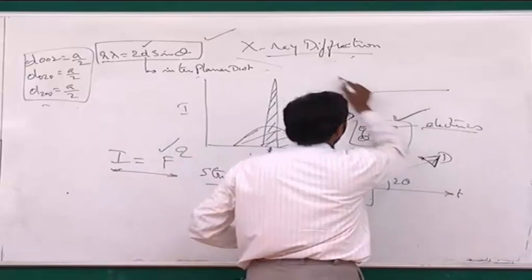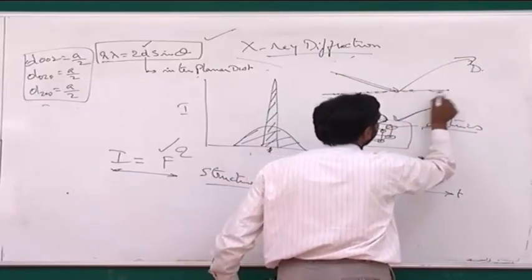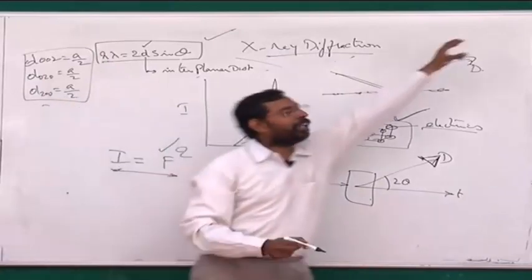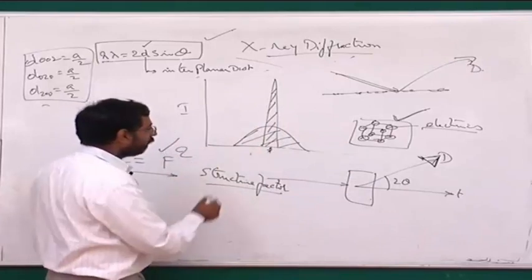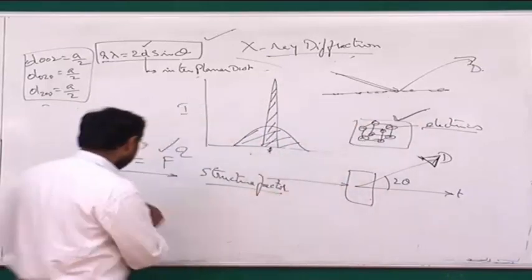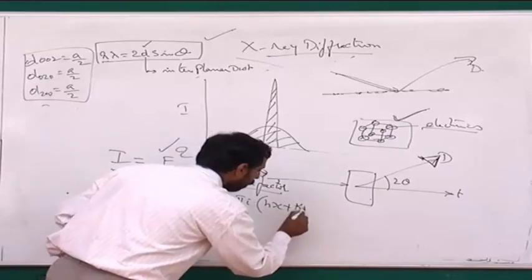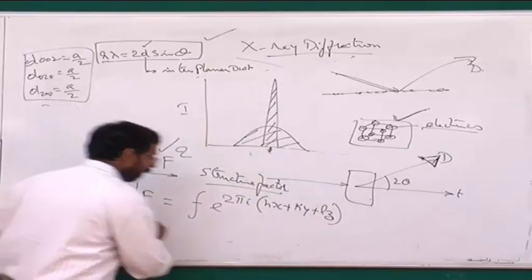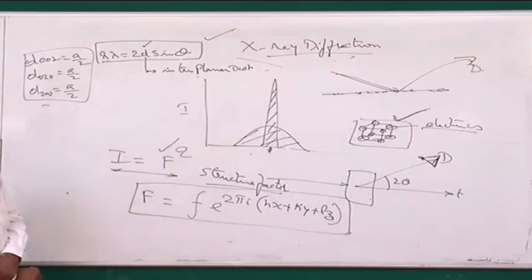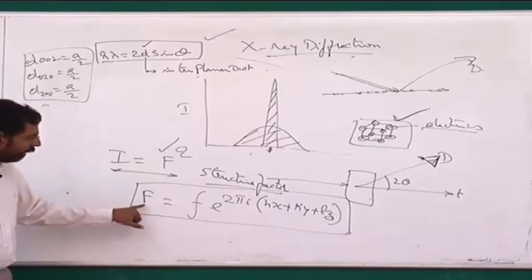Whenever you have an HKL plane giving actual diffraction, the diffracted beam comes from the X-ray interacting with the atoms inside that plane. The atoms have electrons inside them, which interact with the X-ray and give out a diffracted beam. So the structure factor is the amplitude of the diffracted beam coming out of the scattering from a unit cell. This structure factor is given by the expression F times e to the power 2πi(HX + KY + LZ). This is a very profound equation derived from diffraction principles. Here F is the structure factor.